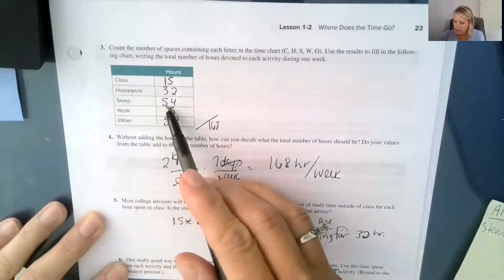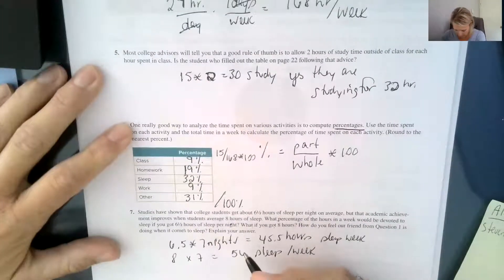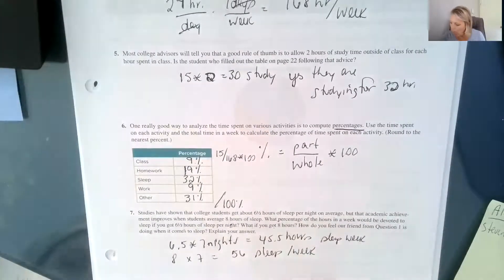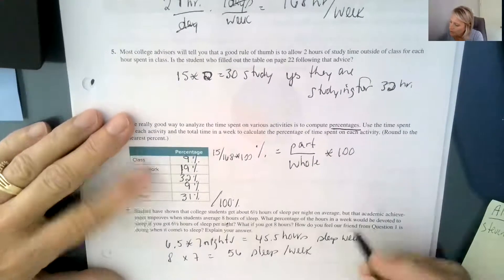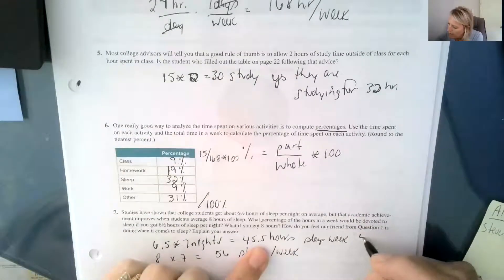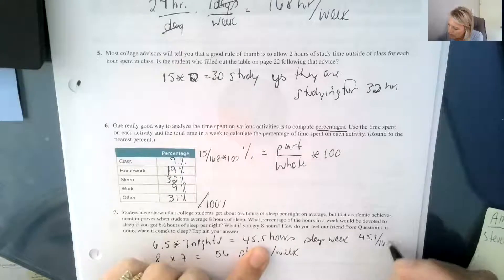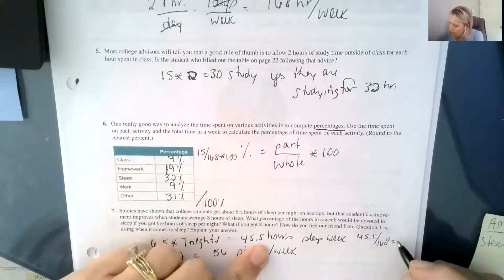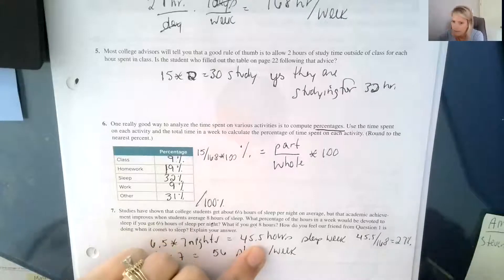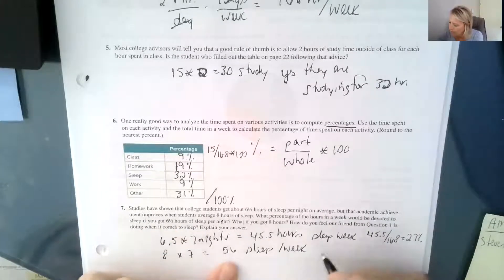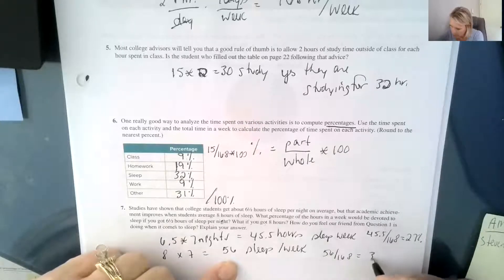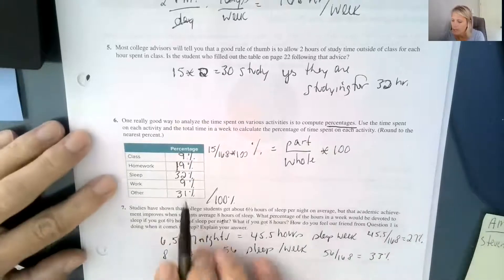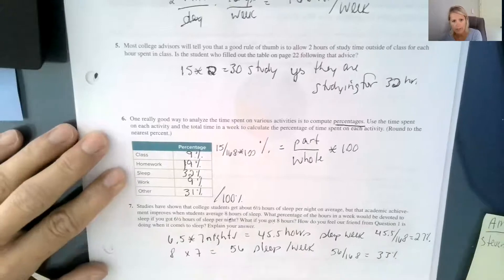And our friend is getting 54, so they're right in the middle. And it says, what percentage would these be? So this one would be 45 out of 168, which would be 27%. And then this 56 out of 168 would be 33%. And our friend is spending 32%. So they're right in between. Our friend is doing pretty well.